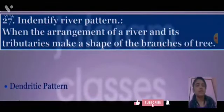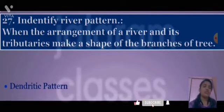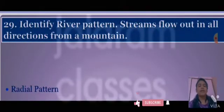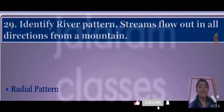River Brahmaputra takes U-shaped turns near Namjibhar peak and enters Arunachal Pradesh. Next: identify the river pattern when the arrangement of the river and its tributaries makes the shape of branches of a tree. Answer: dendritic pattern. Which pattern is formed by streams of the Himalayan region? Answer: trellis pattern. Streams flowing out in all directions from a mountain form a: radial pattern.